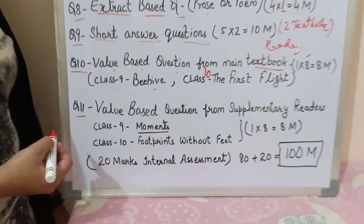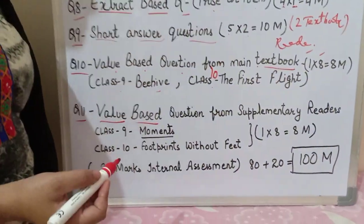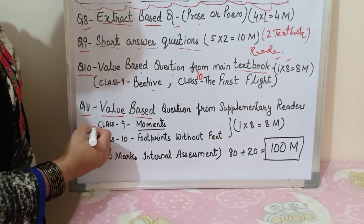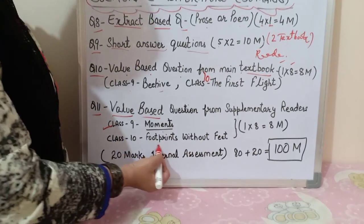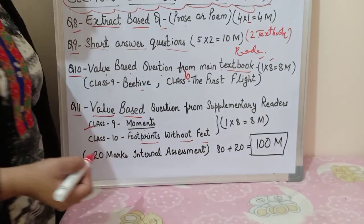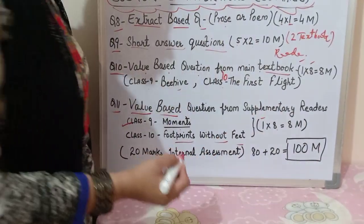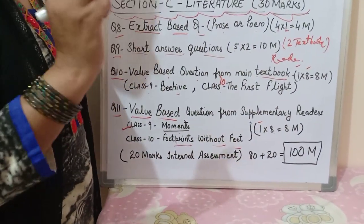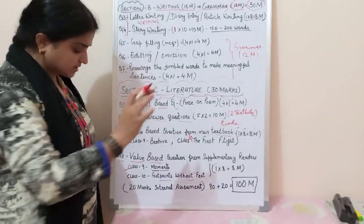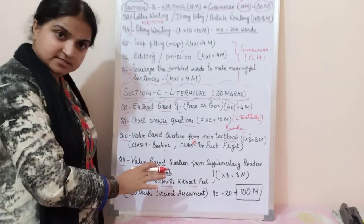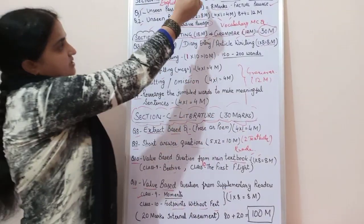Question number eleven is also a value-based question from the supplementary reader. For class 9, the supplementary reader is Moments, and for class 10 it is Footprints Without Feet. It also carries eight marks — one question of eight marks — and you will get a choice of two questions, but you have to attempt only one.